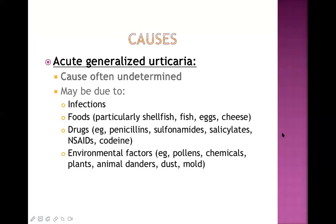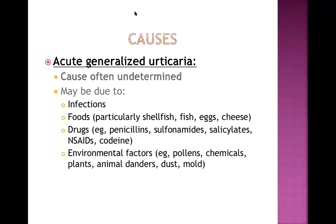For acute generalized urticaria, causes are often undetermined, but may include infection, proteinous foods such as shellfish, fish, egg, or cheese - especially on first exposure. Drug causes include penicillin, sulfonamide, salicylate, NSAIDs, and codeine. Once a person becomes allergic to a food or drug, they should not be exposed to it again, as anaphylactic reaction can occur on re-exposure.